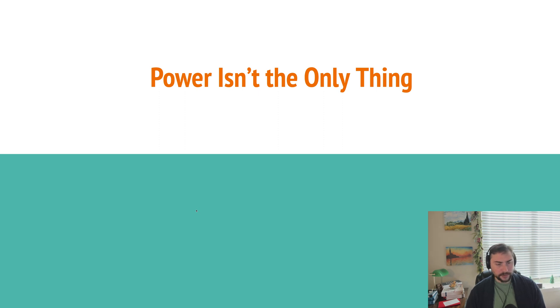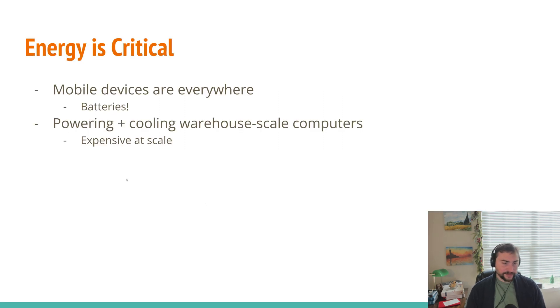It's important to think about that power isn't the only thing. We've largely been concerned right now with the peak power of our processors. But we have to think about the kind of devices that we have today - energy is really critical. We have mobile devices that are everywhere, and most of these mobile devices run on batteries. That's an incredibly important thing to think about. It's also important to think about the fact that these things cost quite a lot to run, like massive server farms and warehouse-scale computers. The cost of power and cooling at scale can be incredibly expensive.